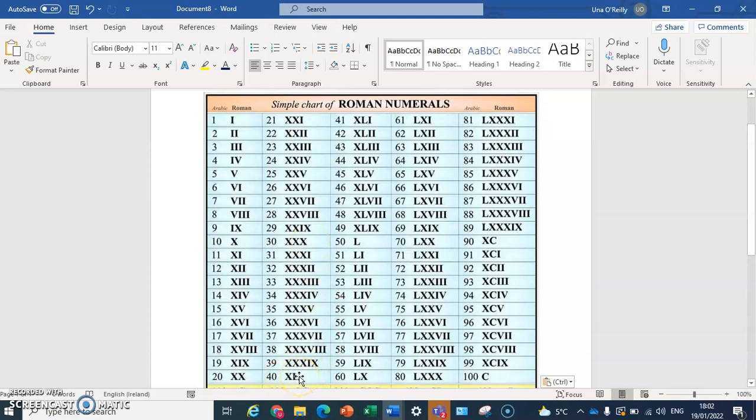But then you get 40, and you can see it's XL, so the L was 50. So X before 50, 10 before 50 is 10 less than 50, which is 40. So this wasn't a straightforward numbering system either.